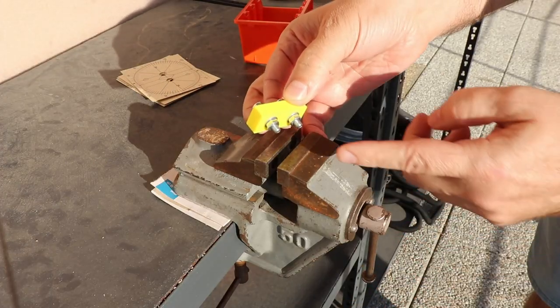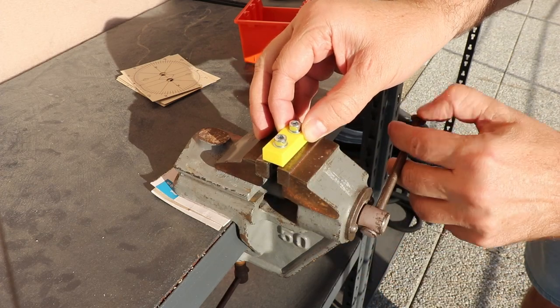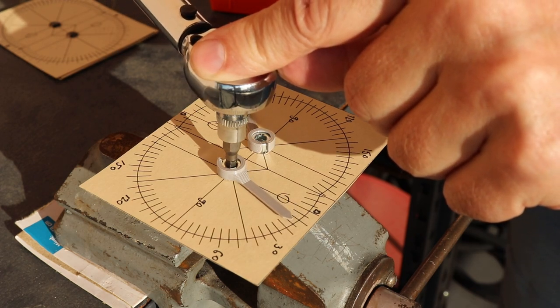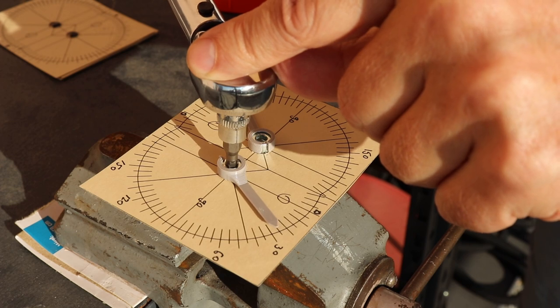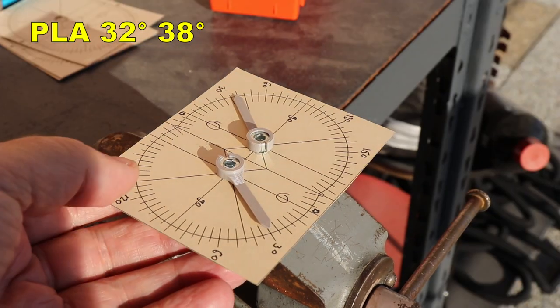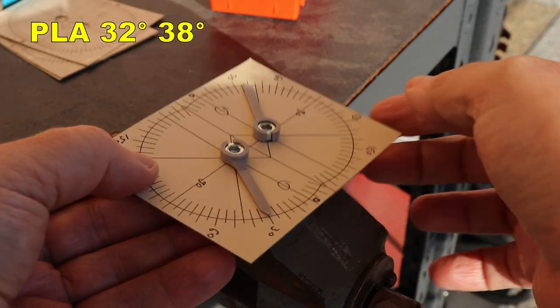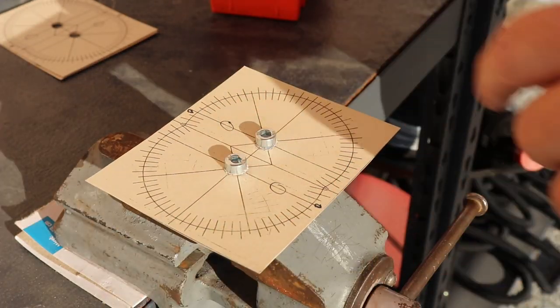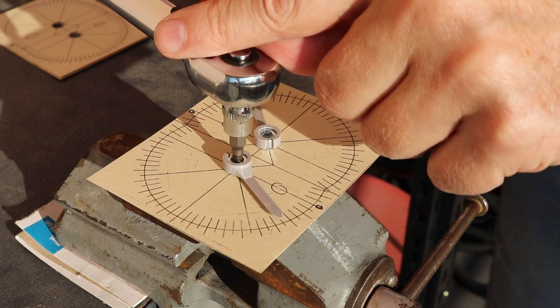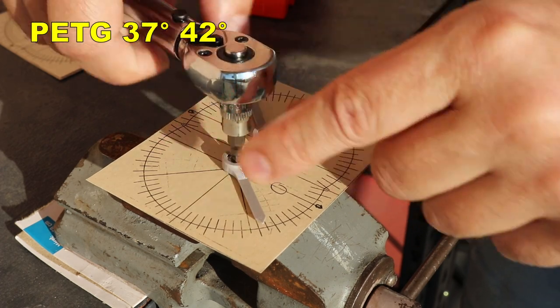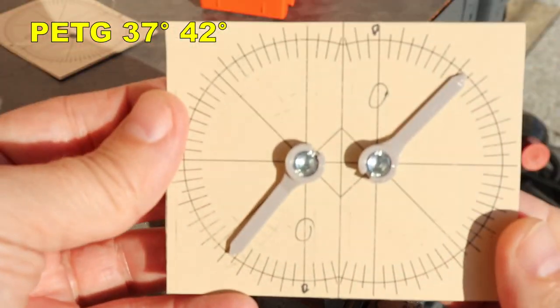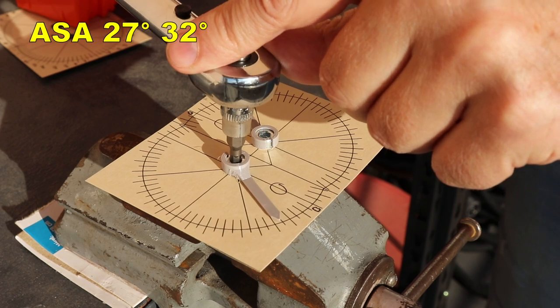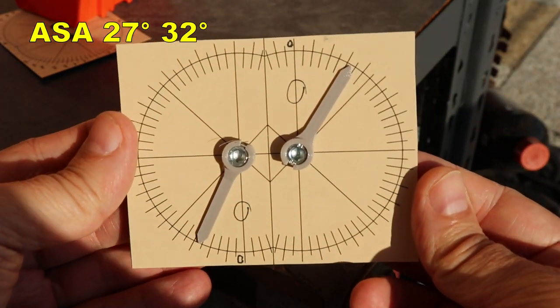And now the torque test. And again starting with the PLA. In video I will show you only one measuring but here you can see the results for both. PETG, ASA, nylon.